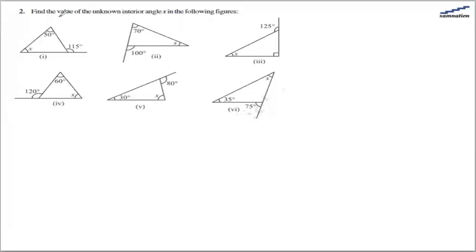In this question we are asked to find the value of unknown interior angle x in the given figures. We are given an exterior angle and one of the interior angles, and we need to find the unknown interior angle. We will use the property that an exterior angle is equal to the sum of the opposite interior angles.